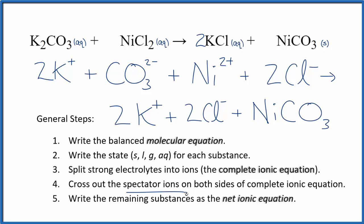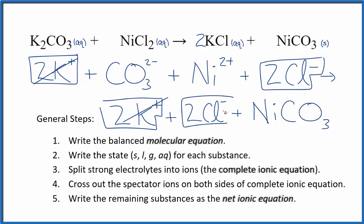Now we can cross out the spectator ions. They're on both sides of the complete ionic equation. So in the reactants here, I have two potassium ions. Down here in the products, I have two potassium ions. Spectator ions, we cross them out. Two chloride ions in the reactants, and two chloride ions here in the products. These are spectator ions. We can cross them out. And what's left, that's the net ionic equation for K2CO3 plus NiCl2.